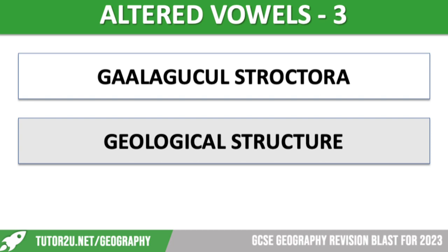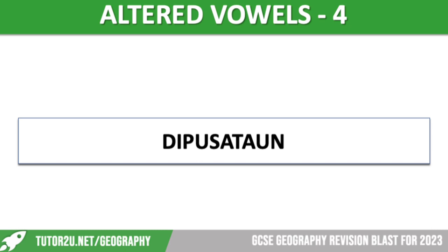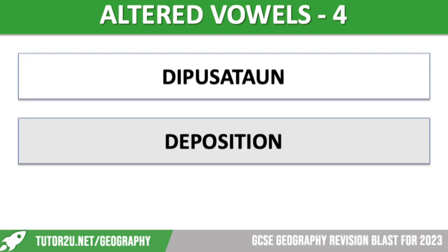Bays and headlands, which we've already talked about, are formed because of those alternating bands of rock. Our next altered vowel term is on the screen — a little bit easier, perhaps, although it has lots of vowels so it looks very different. It is an important process. It is deposition, and we've already discussed some of those landforms caused by deposition.